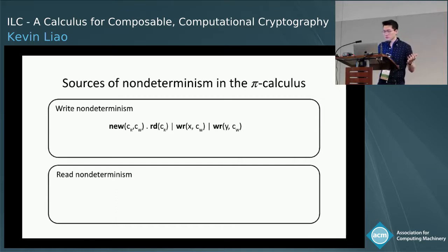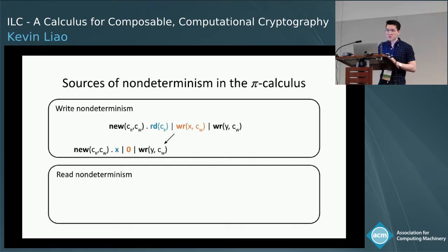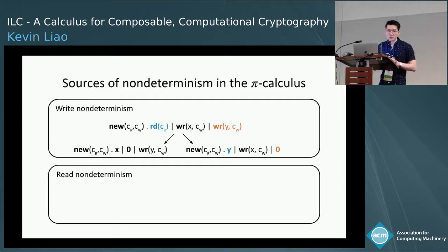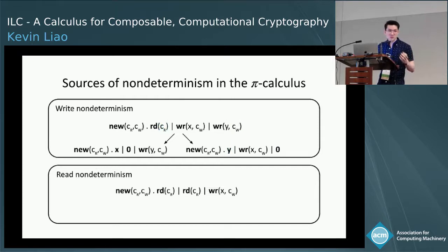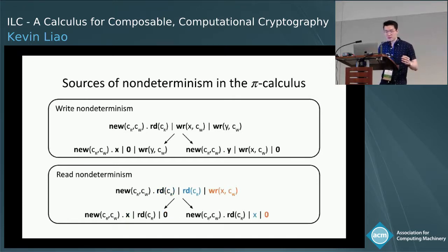We can boil down non-determinism to two main sources. One is write non-determinism: if you have one reading process and two writing processes, one evaluation might have the middle writing process perform its operation, and another might have the rightmost writing process perform its write. The other source is read non-determinism: if you have two reading processes and one writing process, different evaluations may have different processes perform their read operation.